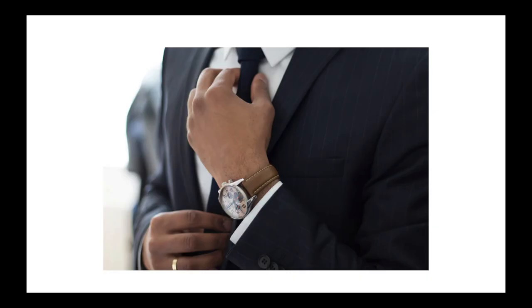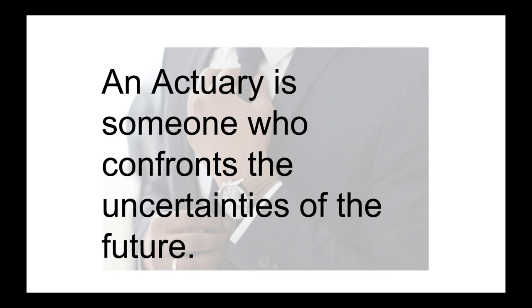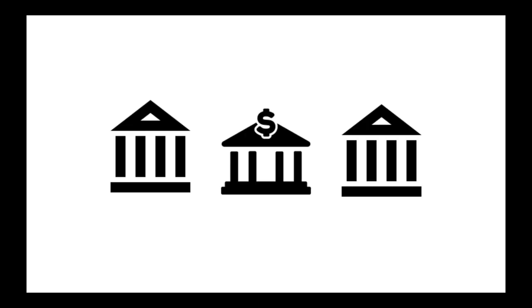What is an actuary? An actuary is someone who confronts the uncertainties of the future, and financial institutions need them because of how severe the consequences of uncertainty are in investments, lending, and insurance. These financial transactions have uncertainty because they're exposed to time, and actuaries love time. The first thing we learn in actuarial science is the time value of money, which then leads to the theory of interest, and so on.